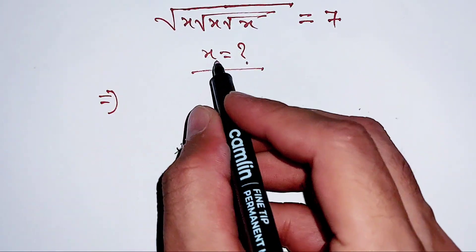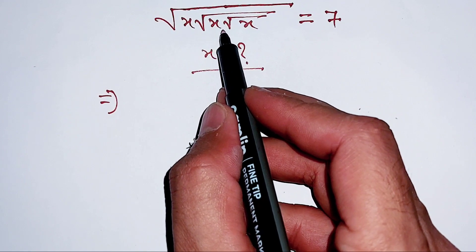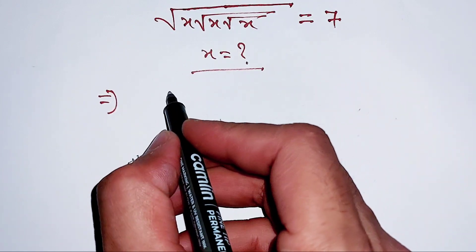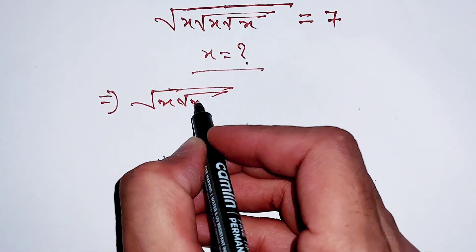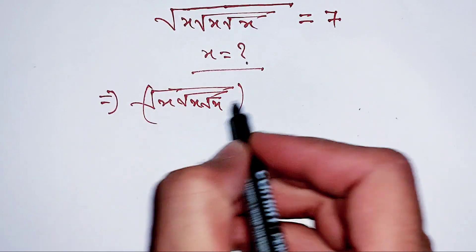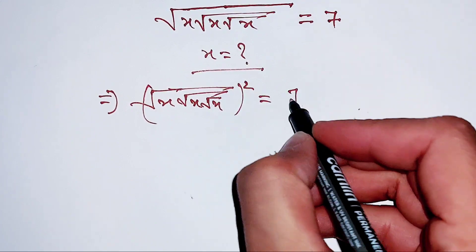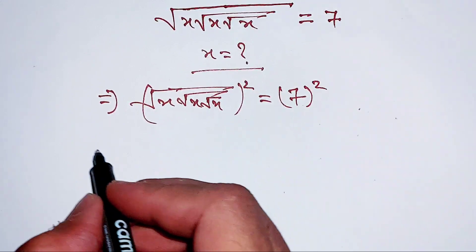First of all, what we will do is take the square of both sides. Here it is square and this is the same square.